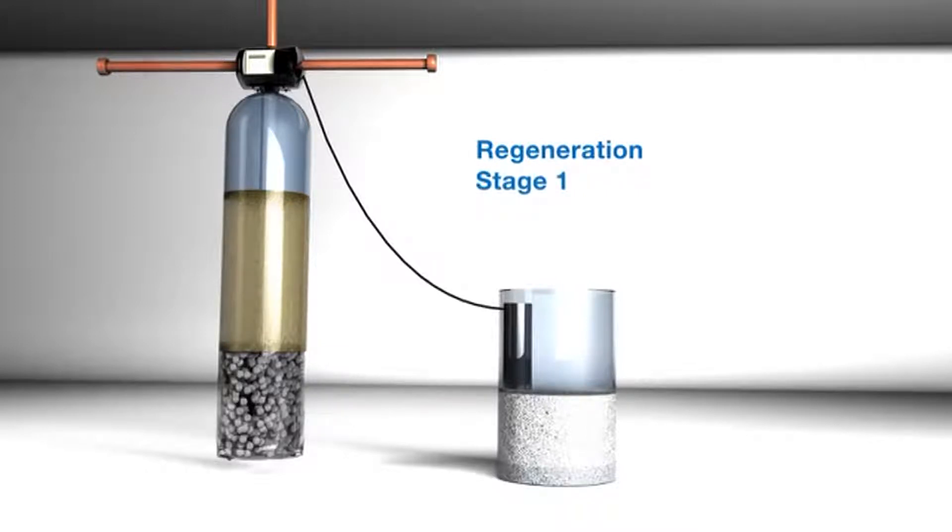Stage one requires us to loosen or expand the resin bed. In this stage, water is brought in and diverted down the center tube. The water is then forced up through the resin bed. As the water pushes up through that bed, the resin expands into the freeboard space. This is called stratification.